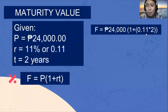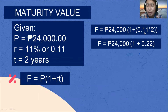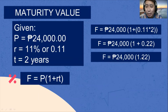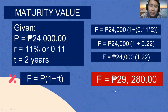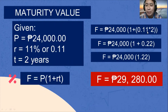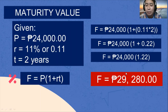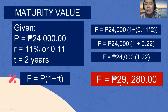First, multiply 0.11 by 2 — the answer is 0.22. Then add 1 plus 0.22, which gives 1.22. Finally, find the product of 24,000 and 1.22. The maturity value is 29,280.00 pesos.